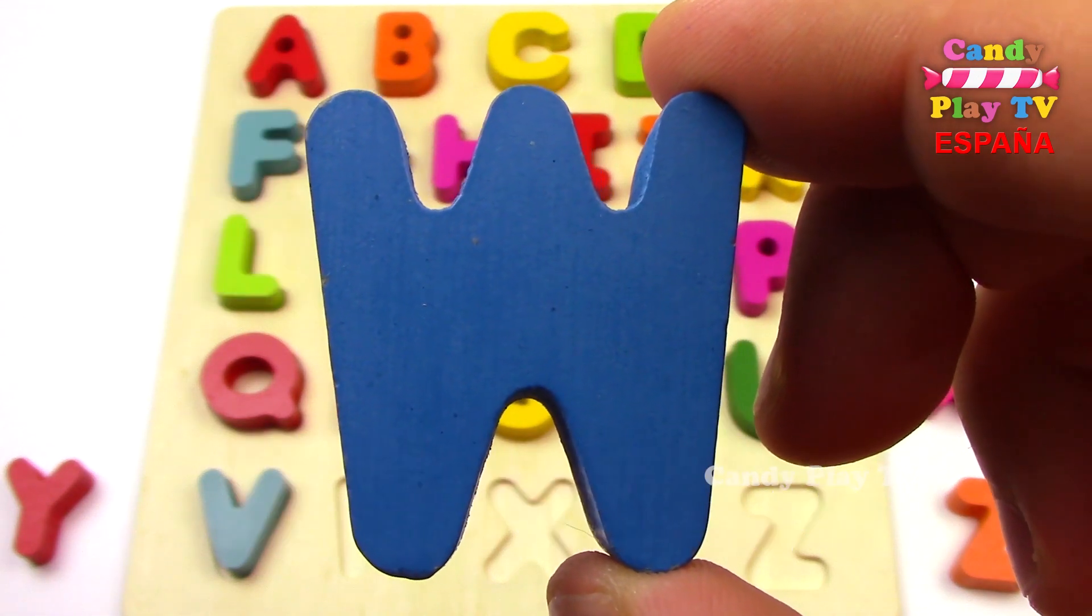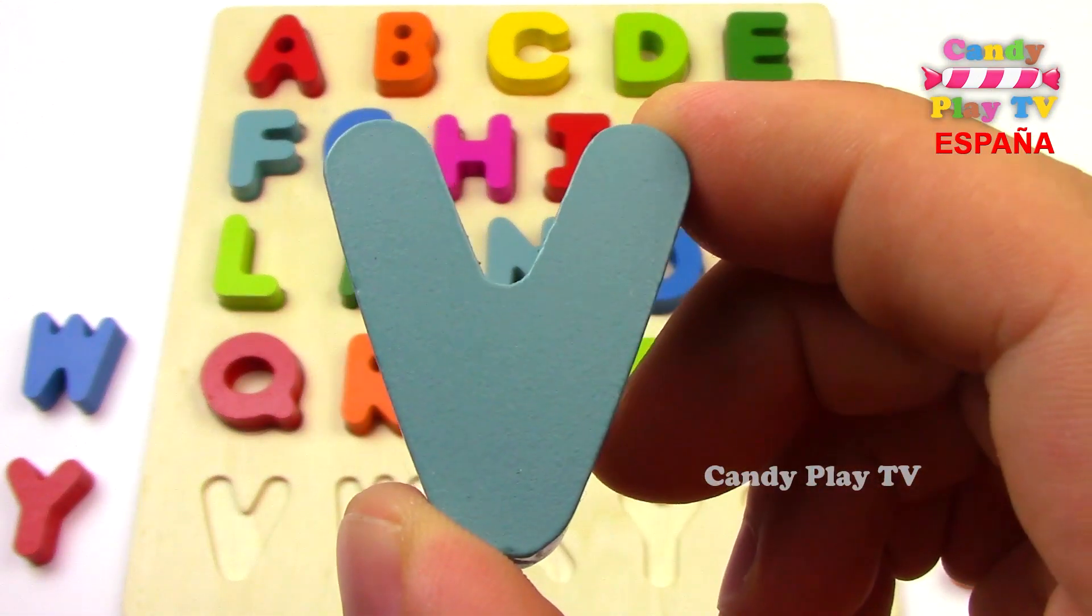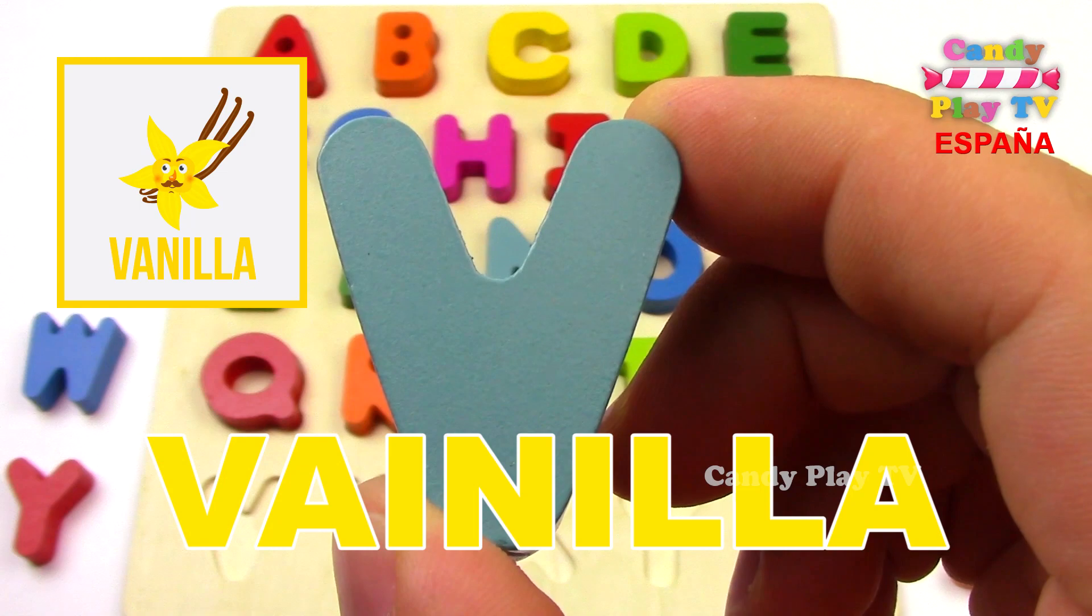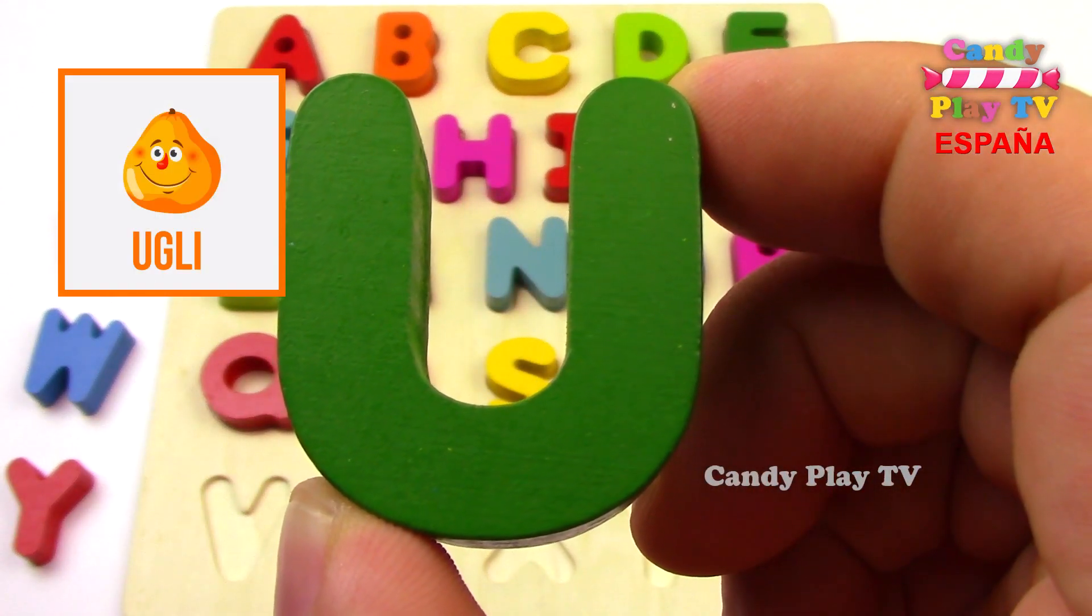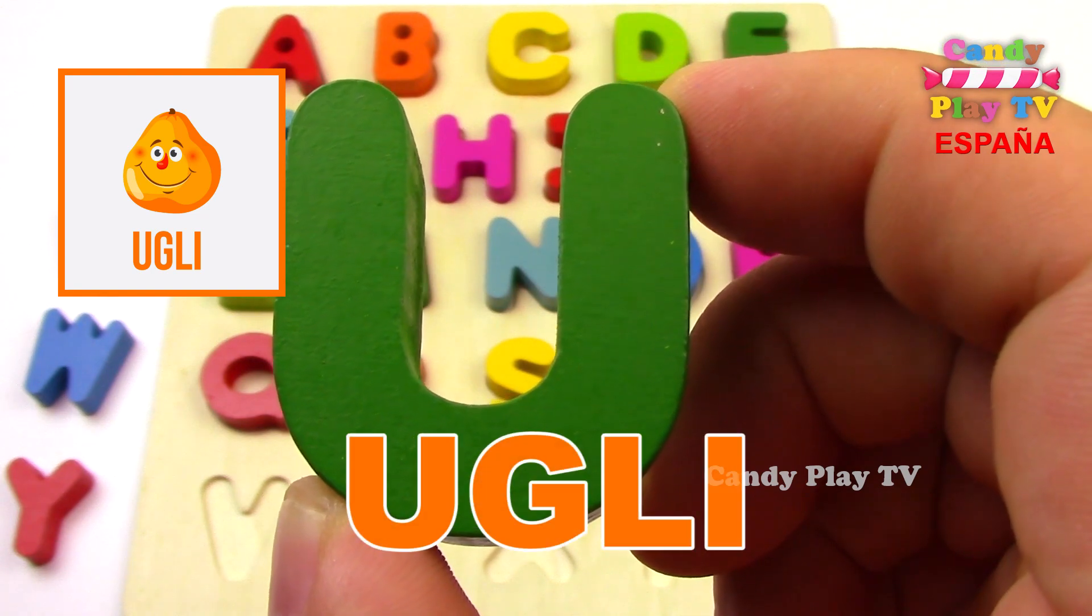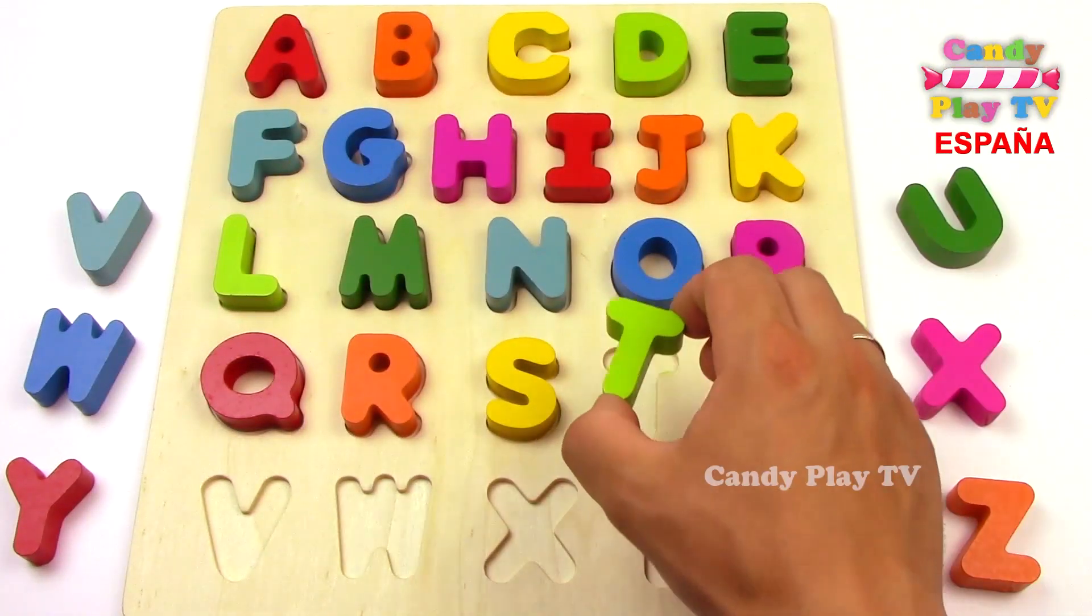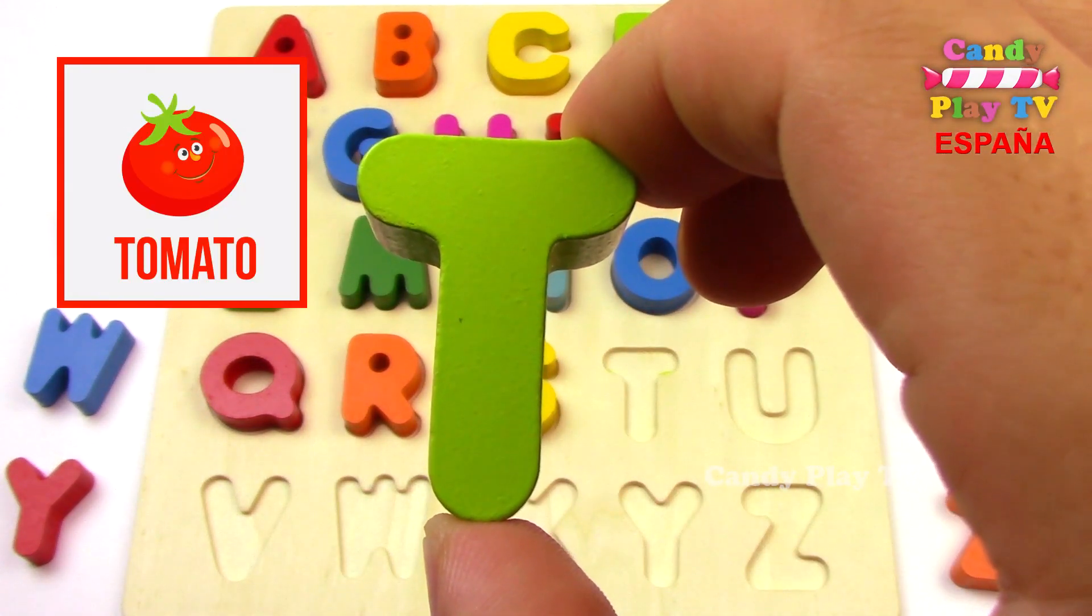V - Vanilla, Vainilla. U - Ugly, Oogie. T - Tomato